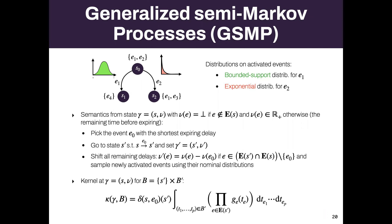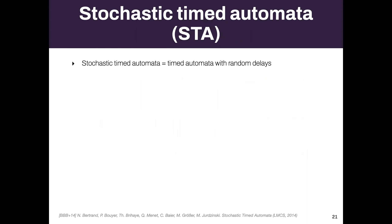This can be formalized using a stochastic transition system with integrals. Another model I want to discuss: stochastic timed automata. If you take the model of timed automata and assign random delays — so delays are random — this gives what we call stochastic timed automata.